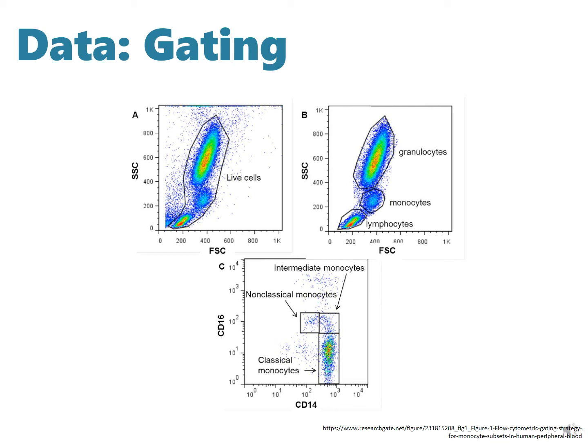Figure B shows the gates with granulocytes, monocytes, and lymphocytes. Granulocytes cause a high side scattering response based on their complexity, while lymphocytes have lowest response for forward as well as side scattering due to their small size and low granularity. Figure C divides the population of monocytes where we can see that classical monocytes dominate the population.